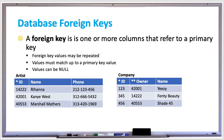Looking at the two tables in the slide, you'll see that in the first table, artist, ID is the primary key. And in the second table, company, owner is the foreign key which matches up to the ID of the artist table. So we know that the company Yeezy has its own ID of 123, but the owner is 42001.